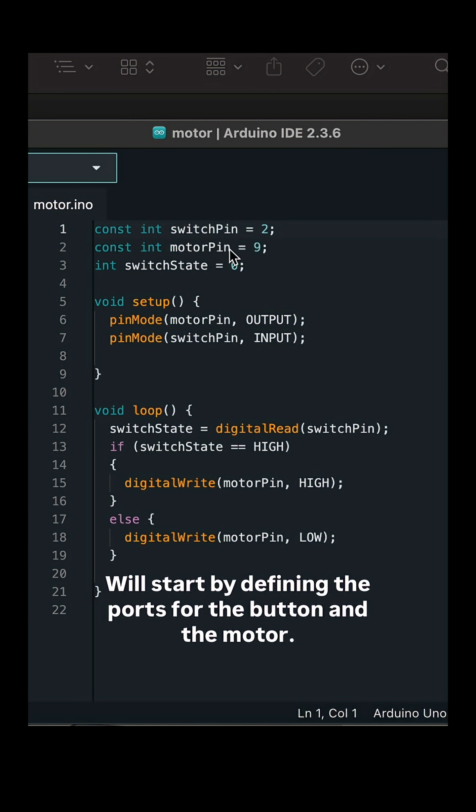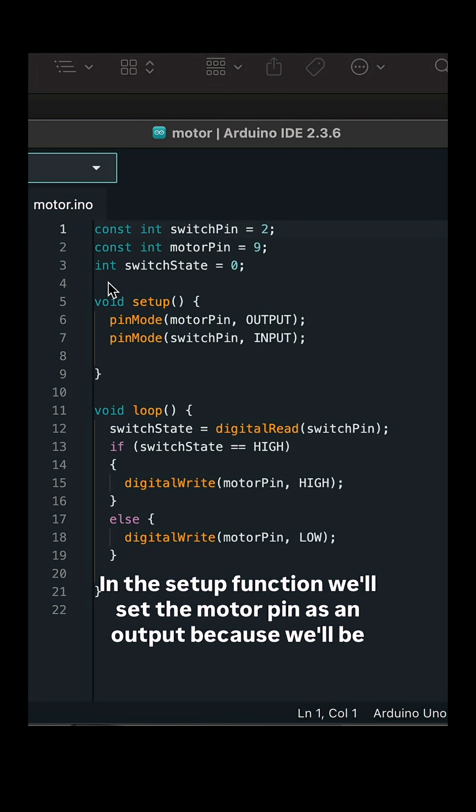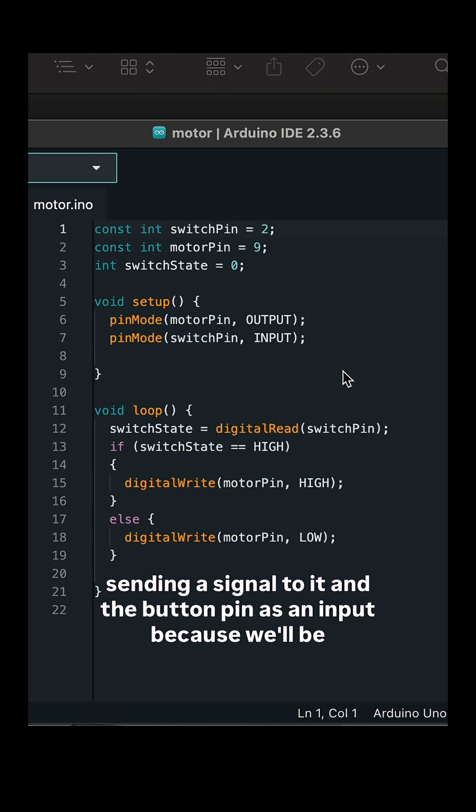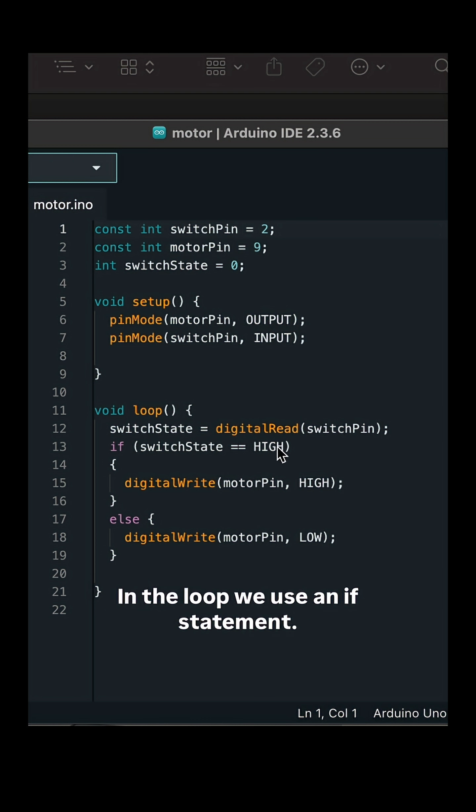Let's look at the code. We'll start by defining the ports for the button and the motor. In the setup function, we'll set the motor pin as an output, because we'll be sending a signal to it, and the button pin as an input, because we'll be reading a signal from it.